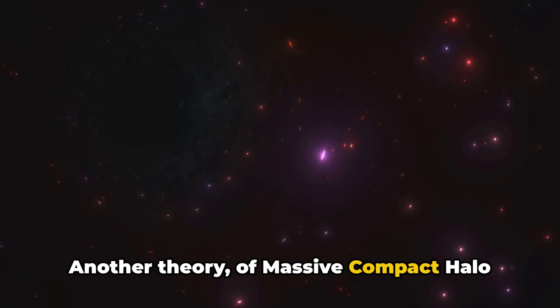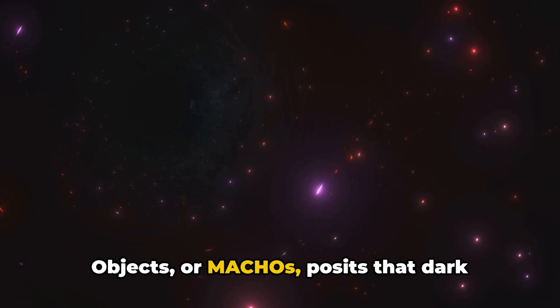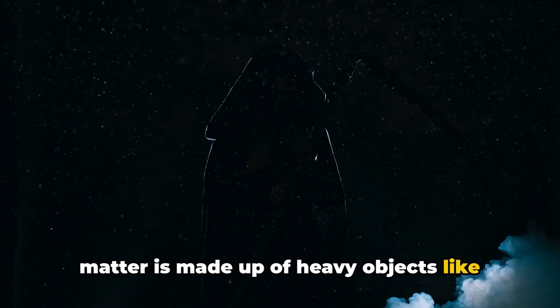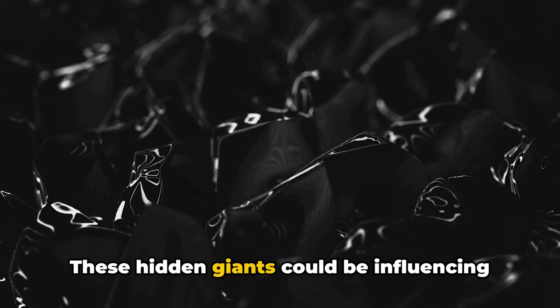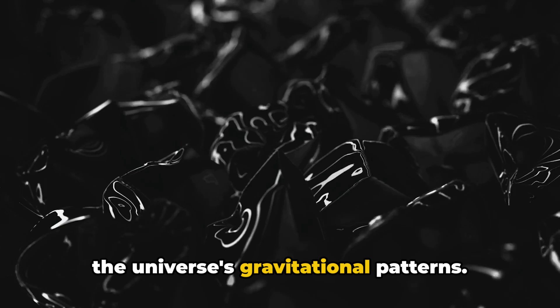Another theory of Massive Compact Halo Objects, or MACHOs, posits that dark matter is made up of heavy objects like black holes. These hidden giants could be influencing the universe's gravitational patterns.